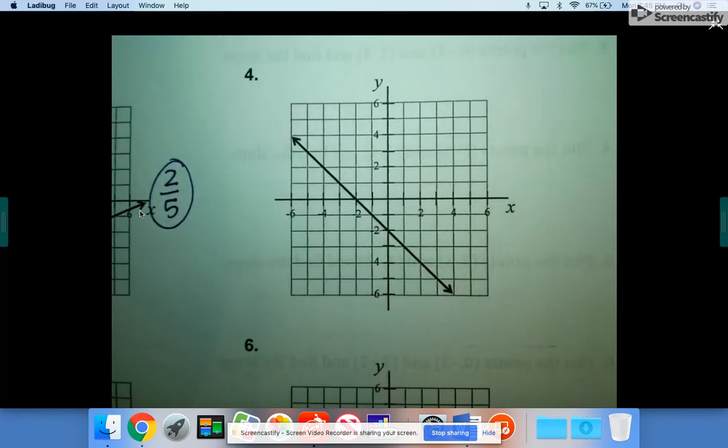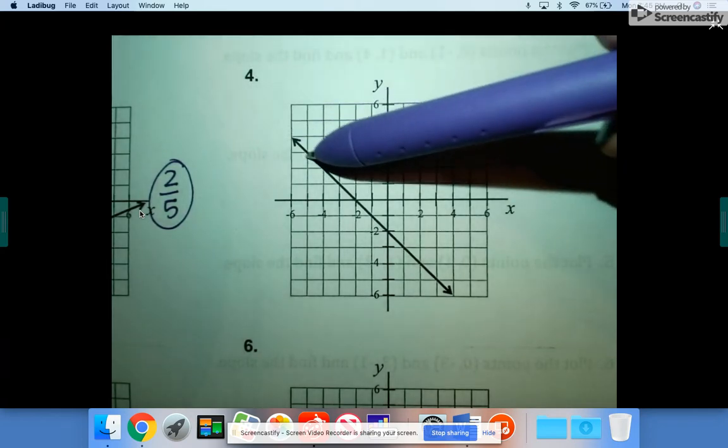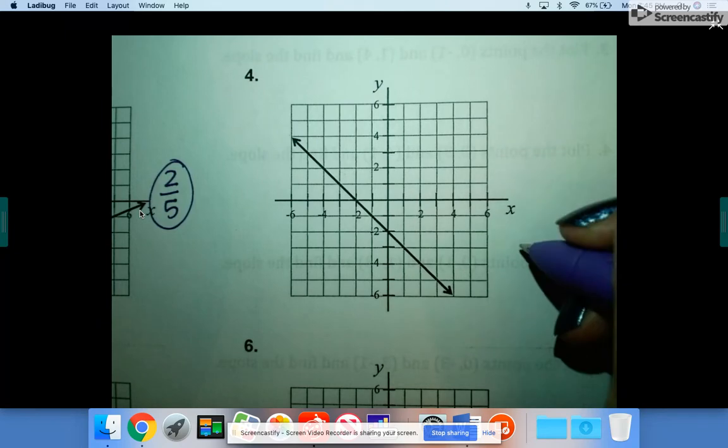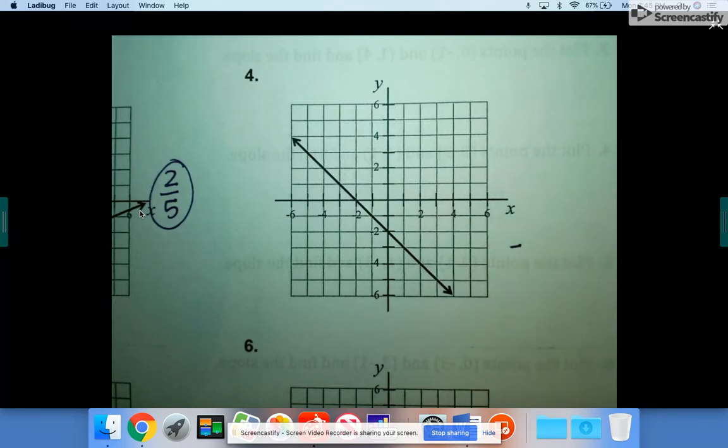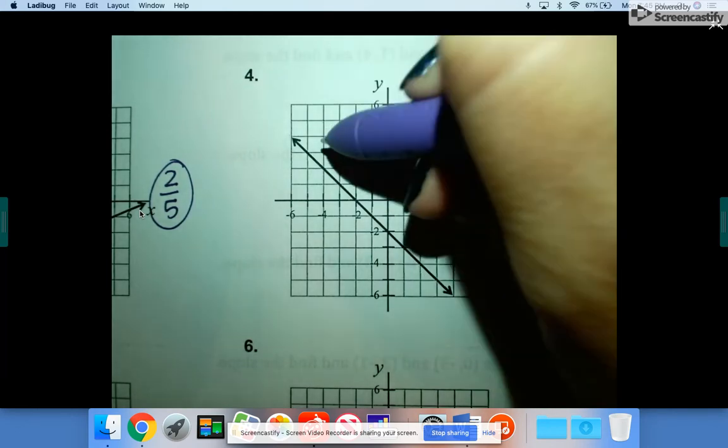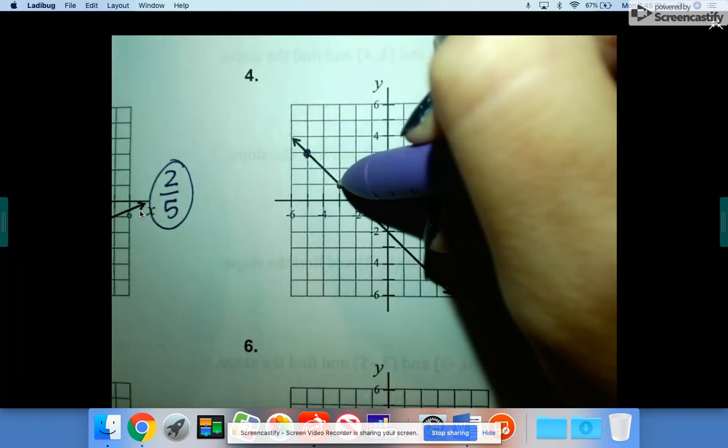All right, number four. The first thing you should see is that it's going down from left to right. That is a negative slope. So I'm going to go ahead and write a negative off to the side so I don't forget. And then I'm going to pick two points. You know what? There's one there and there.